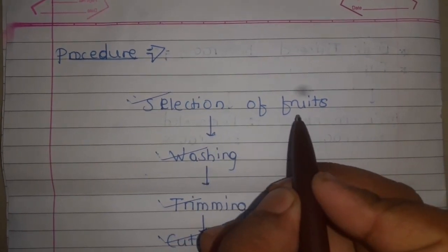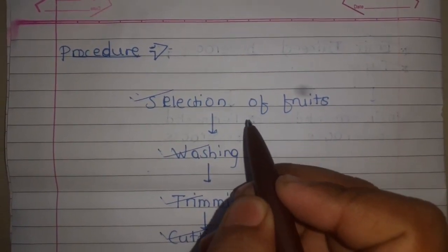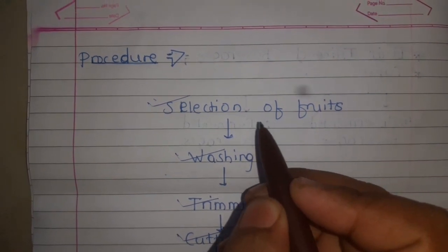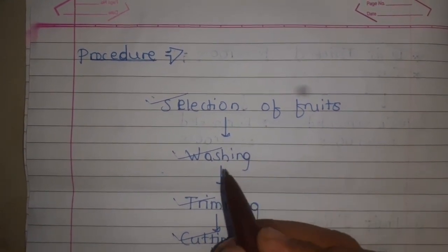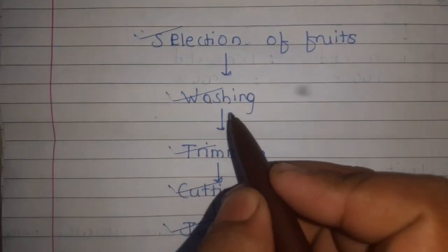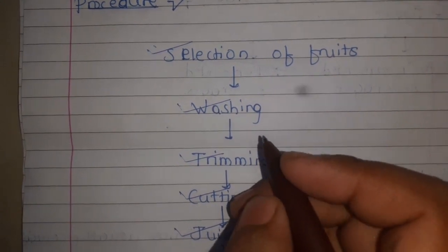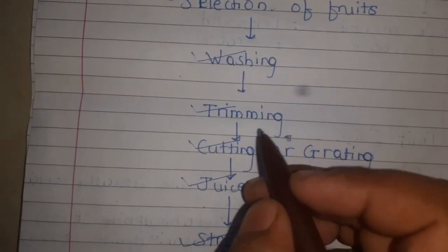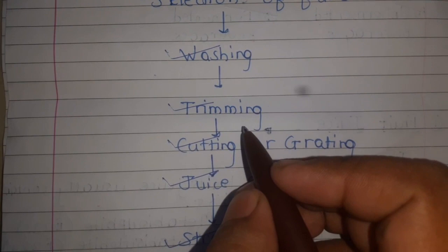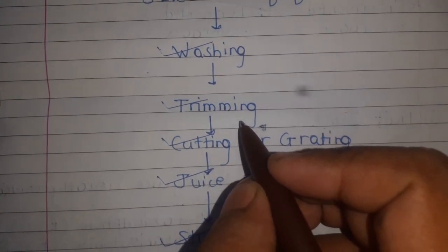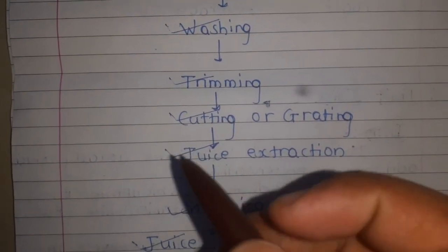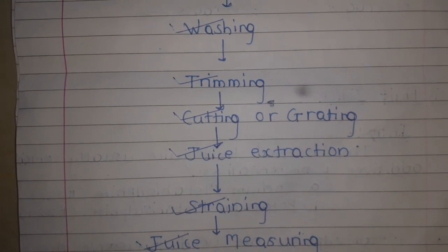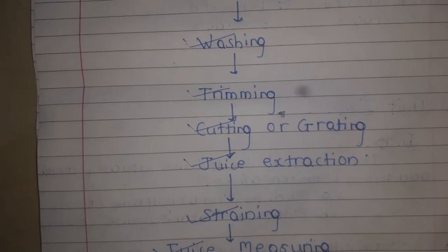Selection of fruits is one of the major processes. The fruits may be ripe, pleasing yellow and free from diseases. After that, washing is done using a stainless steel knife and removing the skin. Trimming is also one of the major steps. Then extract the juice by using a lime squeezer and muslin cloth for discarding the seeds.